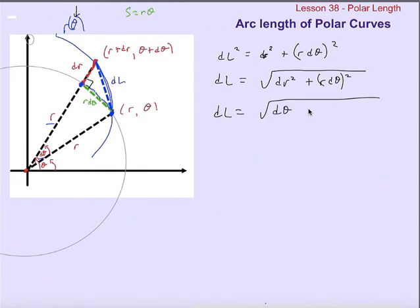Factoring out dθ² leaves us with dr²/dθ² from the first term, and r² from the second term. Just like in previous examples, we can take the square root of the perfect square and pull that dθ out, giving us dL = √((dr/dθ)² + r²) dθ, which we can also write as dL = √((r'(θ))² + r²) dθ.